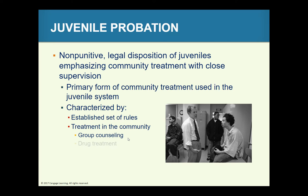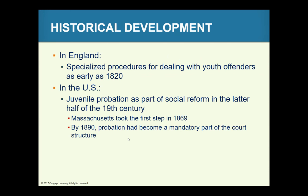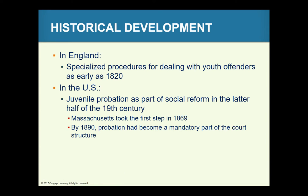Probation promotes rehabilitation by maintaining normal community contacts and avoiding the negative effects of confinement, and it also reduces cost. The historical development started as a wave of social reform. Probation was the cornerstone in the development of the juvenile court system. It expanded and by the mid-1960s, juvenile probation had become a complex institution. Many reformers believed that confinement could actually amplify delinquency.